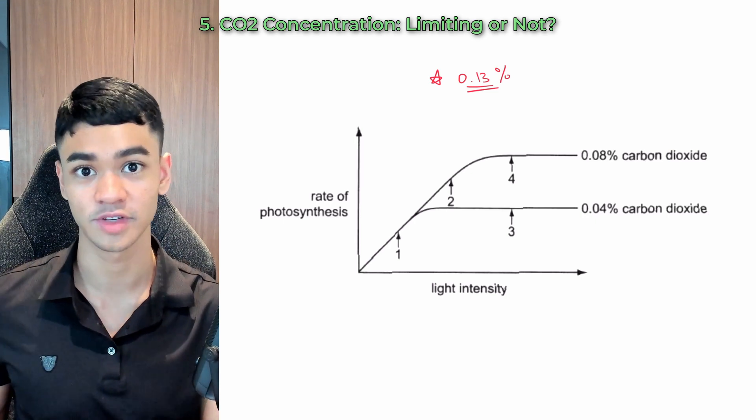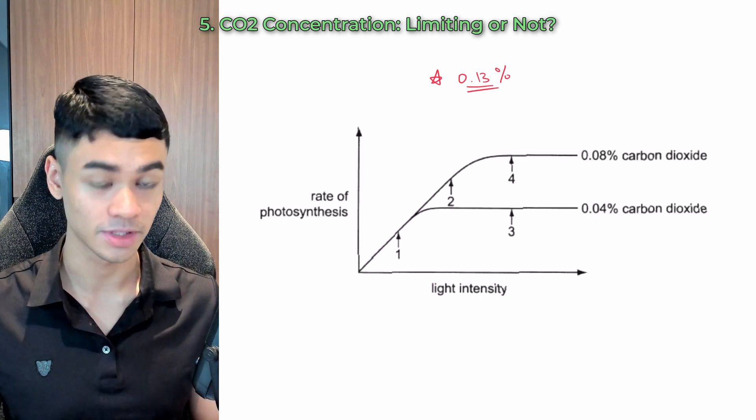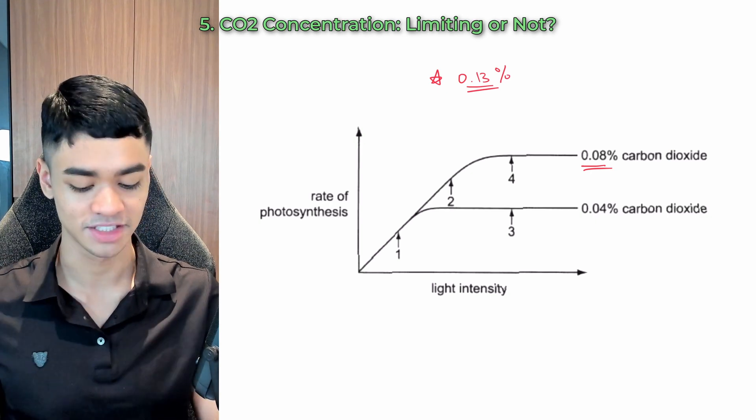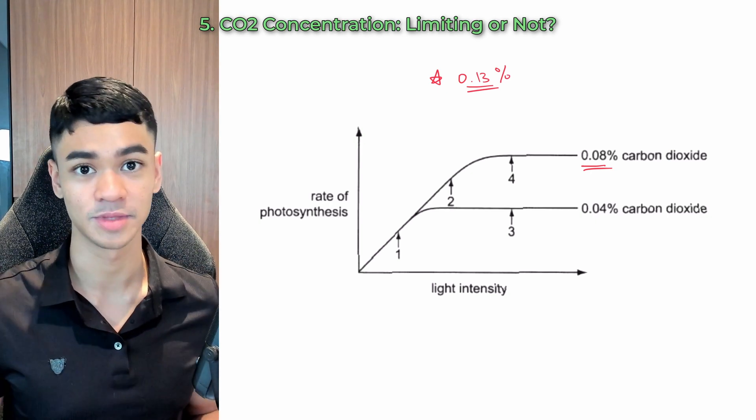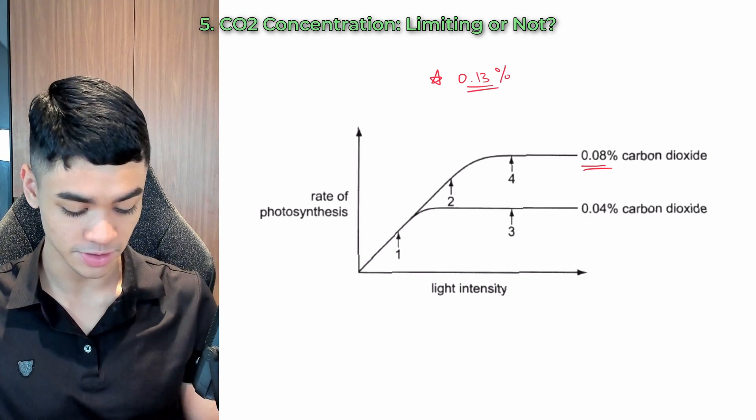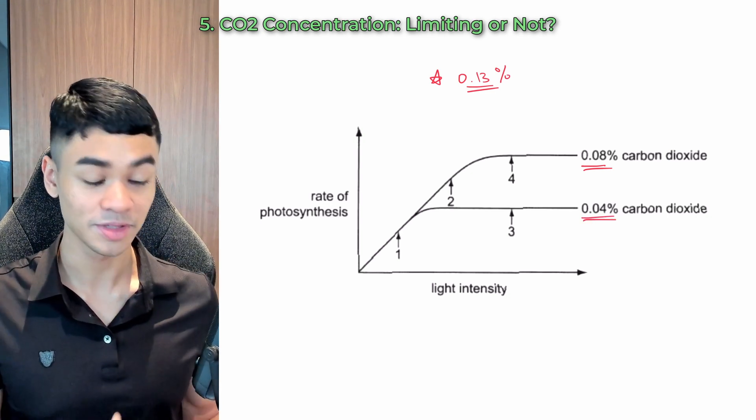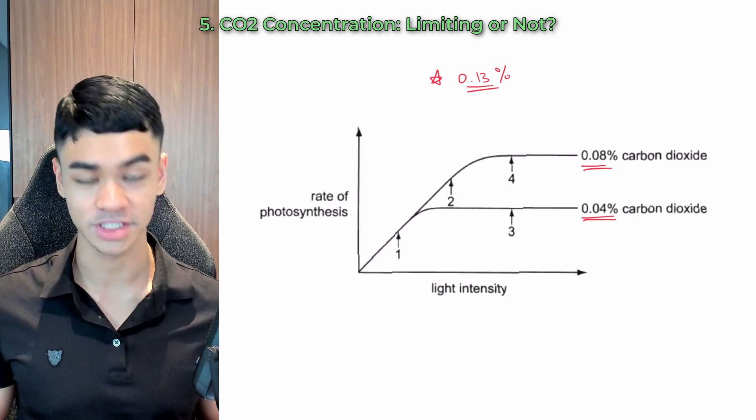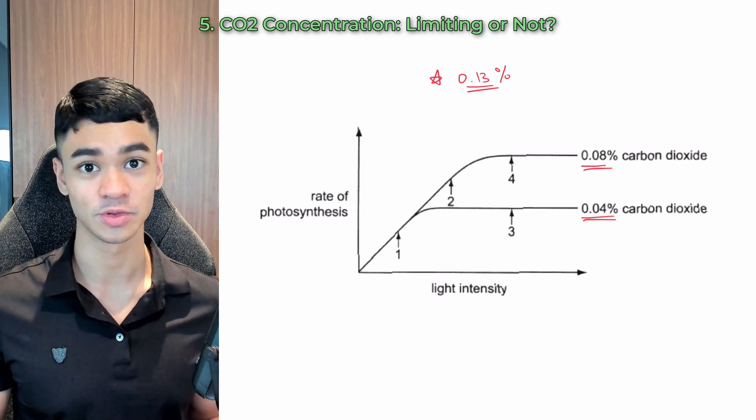So look at the top curve, right? It's at 0.08%, which is less than our magic number. So yes, points along this top graph, CO2 is limiting. For the second graph, it's 0.04%, even lower. So yes, all the points along this graph, CO2 is also a limiting factor. So that's it. Just remember the magic number and doing these questions will be super easy.